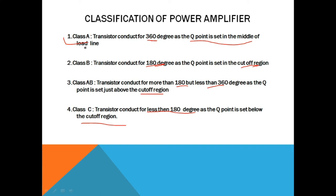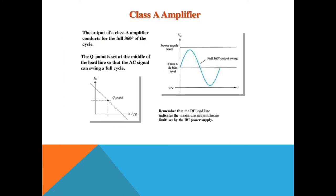So these are the classifications of class A, class B, class AB, and class C power amplifier on the basis of the position of the Q-point. Now, first is class A power amplifier. In class A, the Q-point is set in the middle of the DC load line. This is the output characteristics of the transistor, plotted between output voltage VCE and output current IC, and this Q-point is adjusted in the middle of the DC load line.